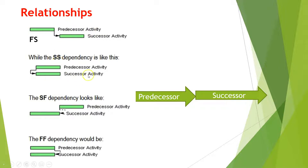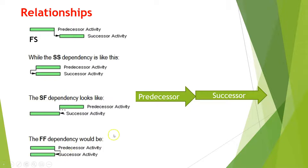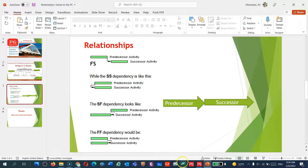Start to start means activities are happening concurrently — the successor activity's start is based on the predecessor activity's start. Start to finish means the predecessor activity's start is tied to the successor activity's finish. Finish to finish means both activities are tied at the end — the successor cannot finish unless the predecessor finishes. For example, you cannot finish concrete unless excavation is complete.